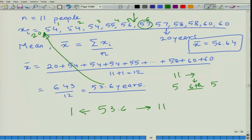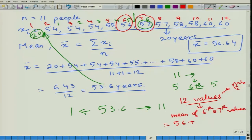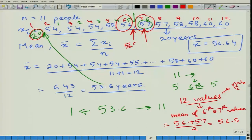Now consider our original example. Suppose we added one extra value of 20. After adding 20, we have 12 values — an even number — so the median is the mean of the sixth and seventh values. The sixth value is 56 and the seventh is 57, giving a median of (56 + 57) / 2 = 56.5. Even though we added an extreme value of 20, the median shifted only from 57 to 56.5 — so the median is very less affected by outliers.